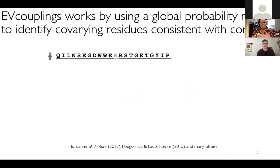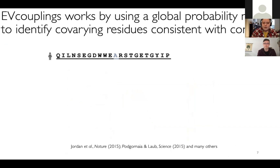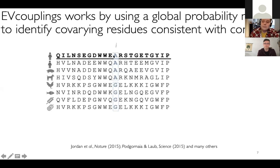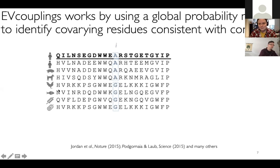We developed a mutation effect prediction model for ApoE and found that the two isoforms E2 and E4 were on completely opposite ends of the spectrum in terms of our mutation predictions — and they also have completely opposite phenotypes with regard to Alzheimer's disease risk. Our predictions are borne out by what we know about human variation in this protein sequence.